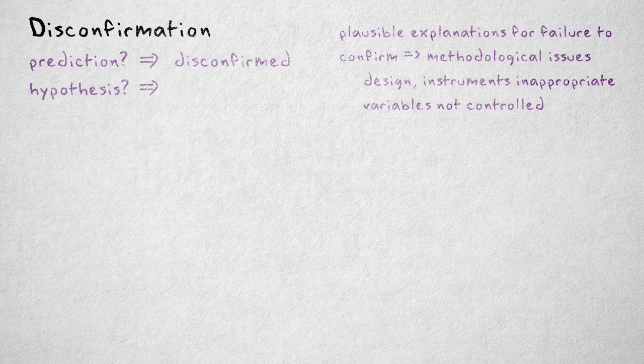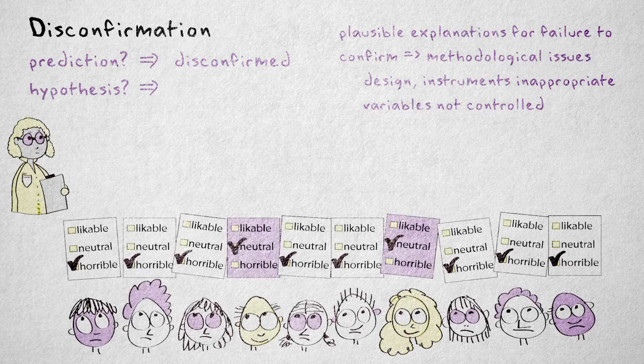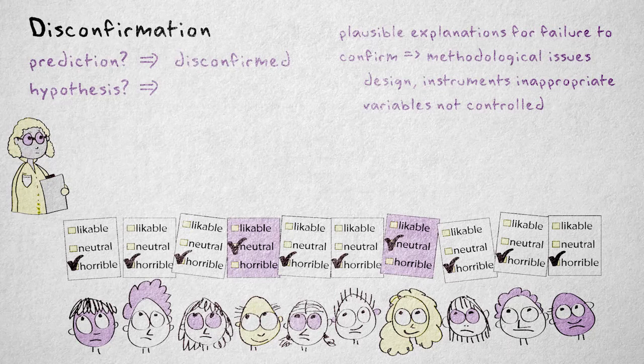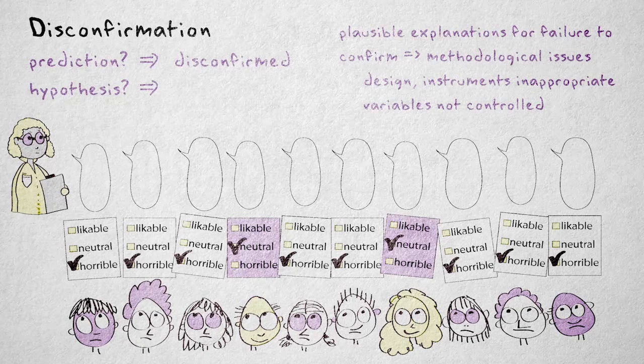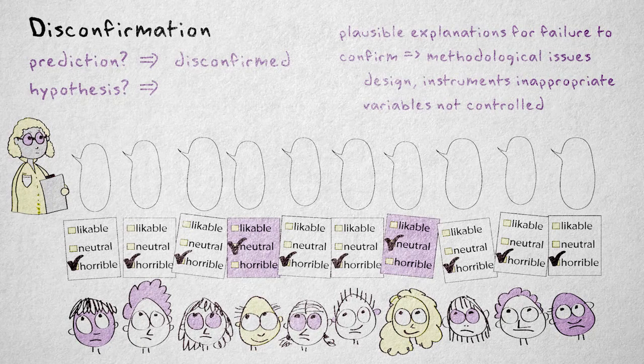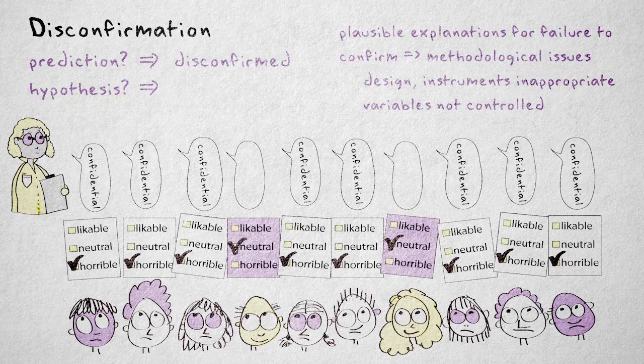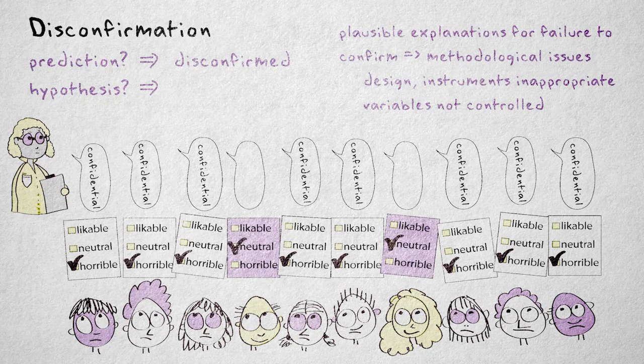Coming back to our mother-in-law example, I could have made a procedural error while collecting responses from the two colleagues who rated their mother-in-law as neutral. Maybe I forgot to tell them that their responses were confidential, making them uncomfortable to choose the most negative category.